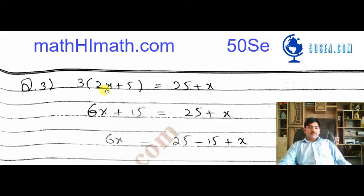This is the variable x. First of all, we will multiply 3 into both elements. If we multiply 3 into 2x, we get 6x, and 3 into 5 gives us 15. This is equal to 25 plus x.